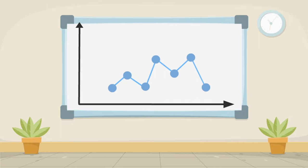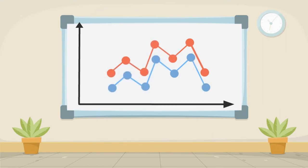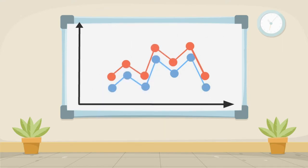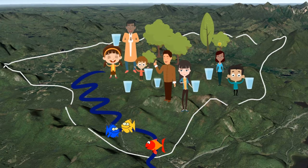First, we use the model to simulate the past. We compare what the model simulated with what was observed. This process is called calibration. An important metric used for calibration is stream flow. When we know the model is working well, we can use it to simulate the future and see what the future might look like in our watershed.